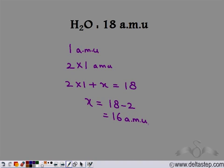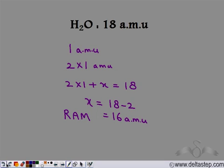So the relative atomic masses of other elements are found out by comparing them with the lightest element — in this case, hydrogen. When hydrogen combines with different elements, we get the atomic masses of those species. That is how we get the relative atomic mass of a particular species. The relative atomic mass is also abbreviated as RAM.